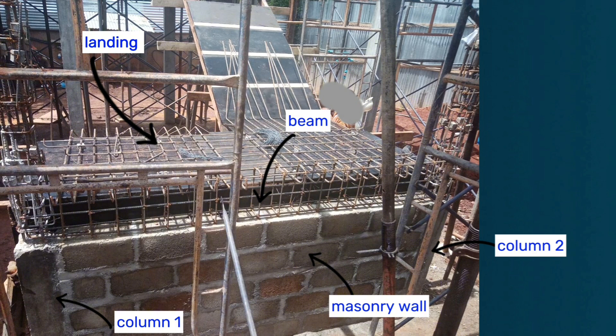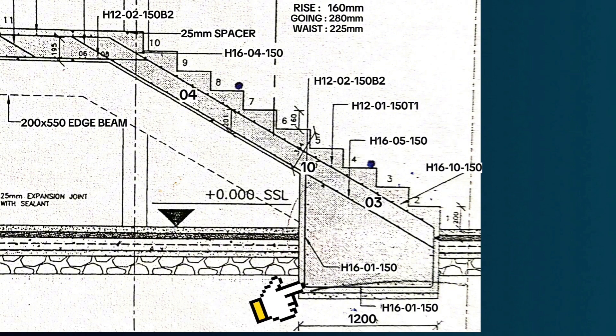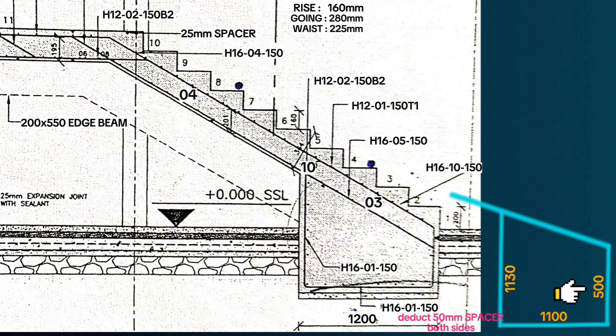When preparing a bar bending schedule for the staircase, we begin with this bar shape here at the bottom. When we extract this bottom bar out of the main drawing, this is 1.2 meters here at the bottom, this is 500 millimeters. And then the task is now to find out this last side here.